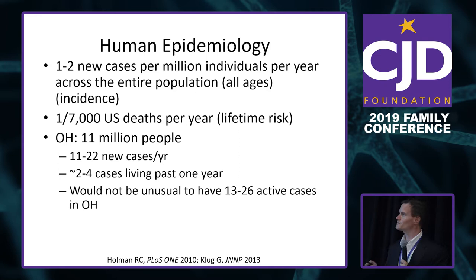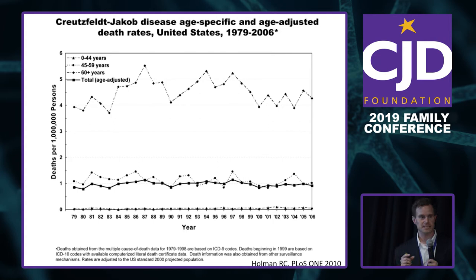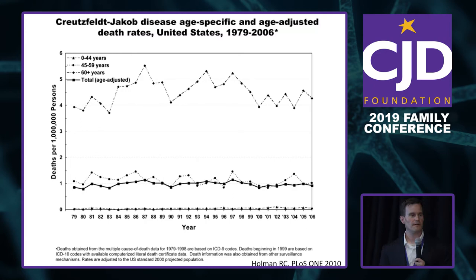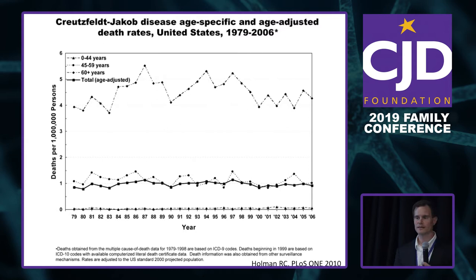Looking at incidence another way: overall it's around one case per million, but for people 60 and older, that number rises to about four to six cases per million per year. This reflects that not everyone is equally at risk — it really matters how you describe the frequency of the disease.